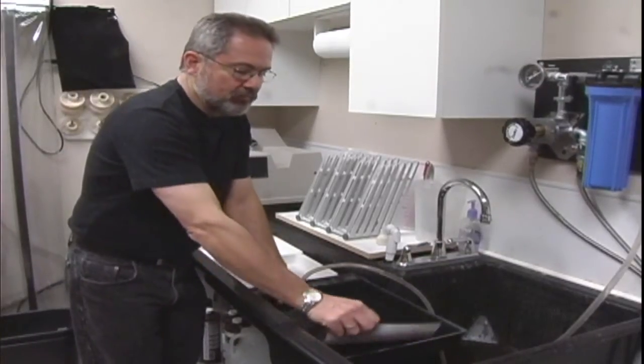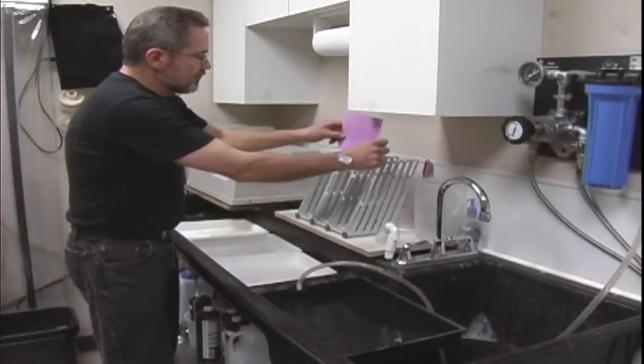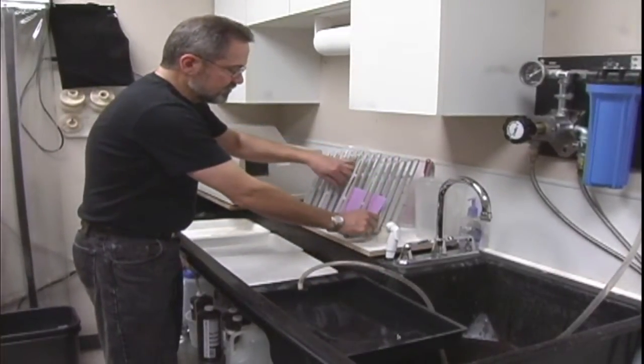Once you've completely washed your print, it's ready for drying. So we'll put this in a drying rack, and that's how we process black and white paper.